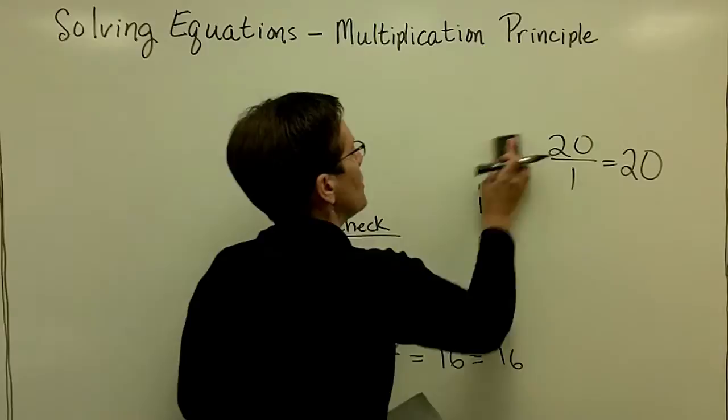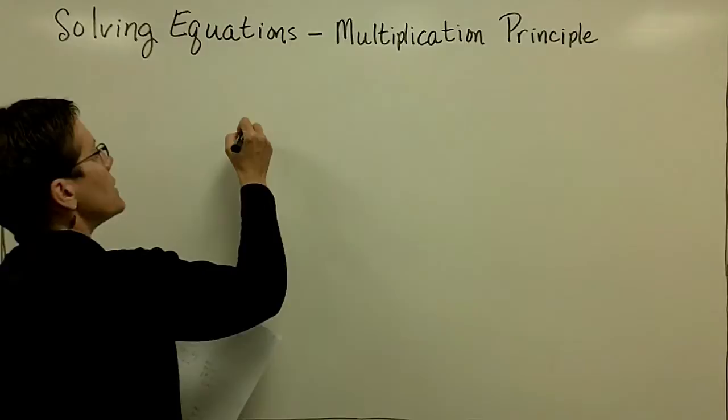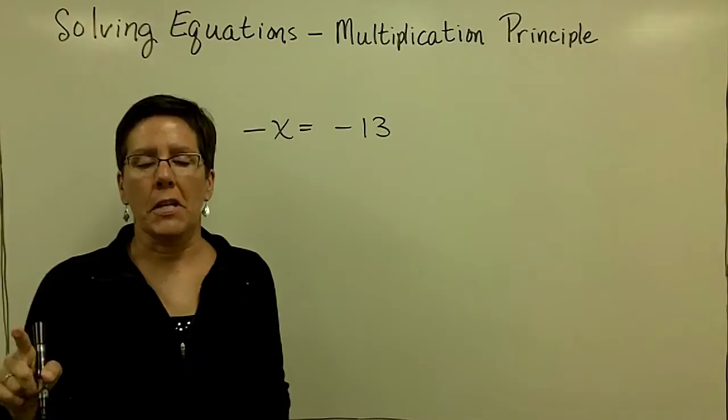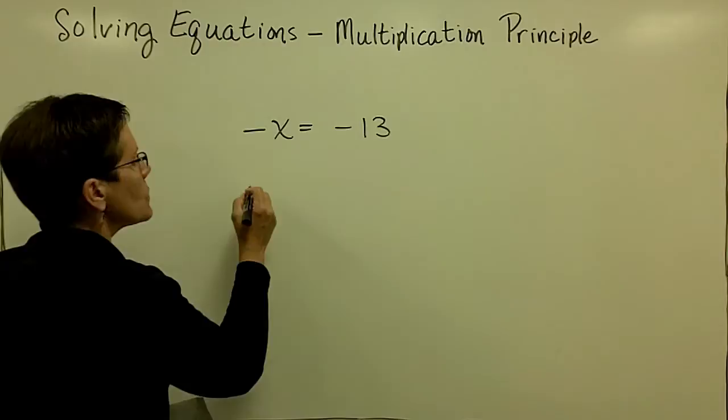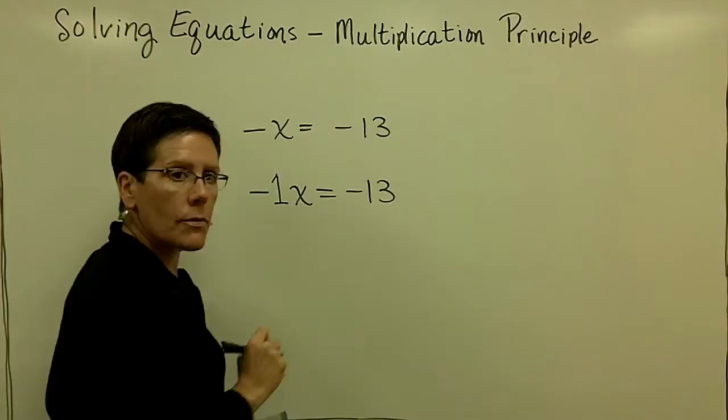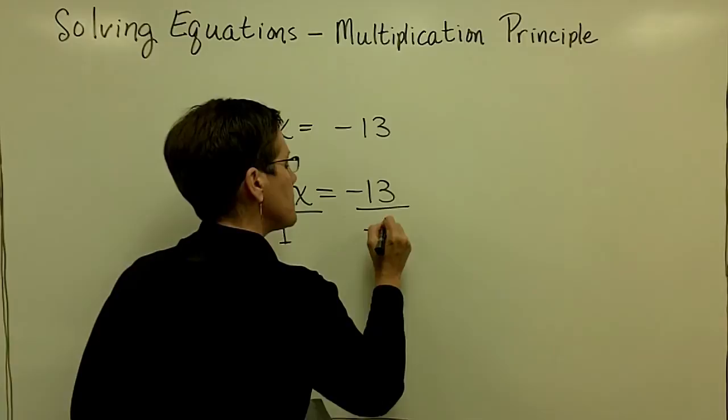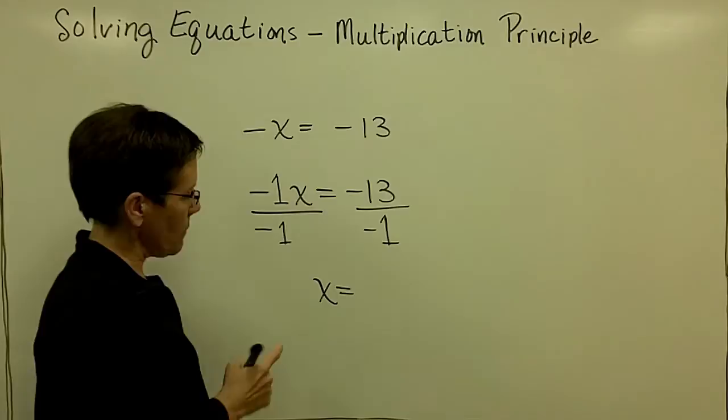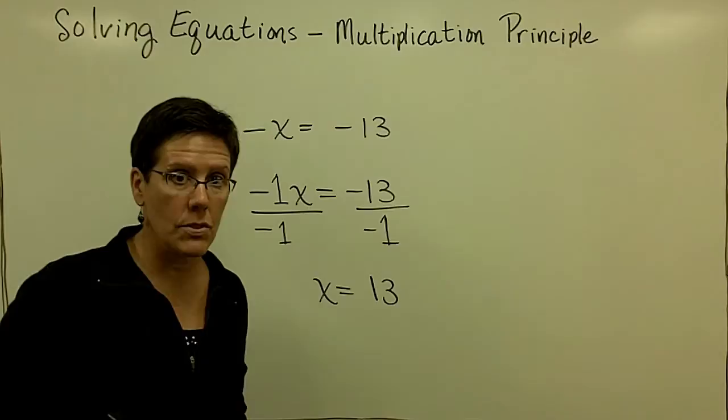Let's do one where there's a negative sign in front of the variable x. So I have negative x equals negative 13. If there's no number written in front of the variable x, it's recognized to be a 1. So this is really negative 1x equals negative 13. What you need to do is divide both sides by negative 1. That makes this become just a positive x, and negative divided by negative is a positive, so 13 divided by 1 is 13.